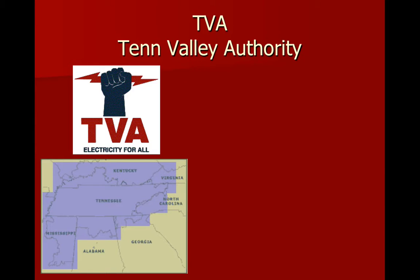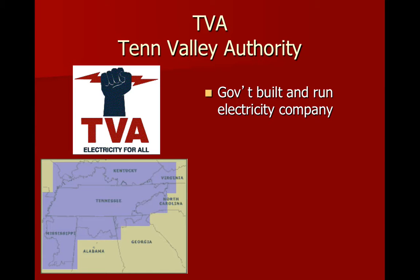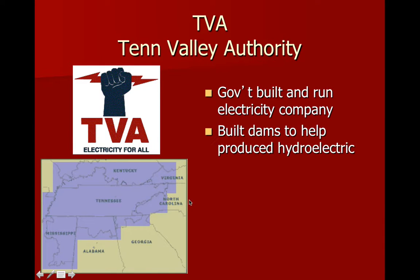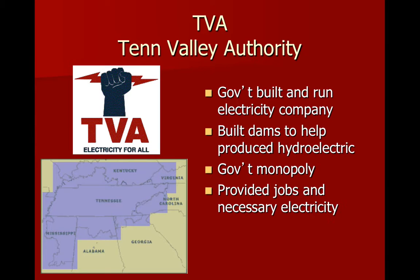There's another recovery institution called the TVA, the Tennessee Valley Authority, which is still around today. My dad actually worked for the TVA for a short time. It was a government-built-and-run electricity company. The idea was: if we build dams in this area, people will have jobs, and we'll also produce hydroelectric power to technologically revolutionize this entire backwater land. The problem is this is something typically done by private businesses, but the TVA was a government-run monopoly. Instead of private businesses making millions, the government is doing the job. But as much as it's a government-run monopoly, it provided jobs and necessary electricity, and is still around today.